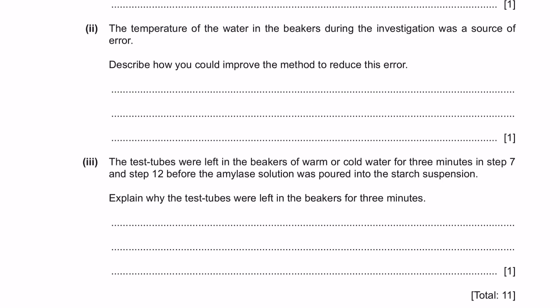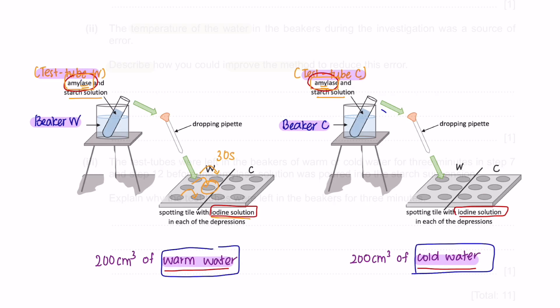Part 2. The temperature of the water in the beakers during the investigation was a source of error. Describe how you could improve the method to reduce this error. This is quite a common source of error in biology experiments.